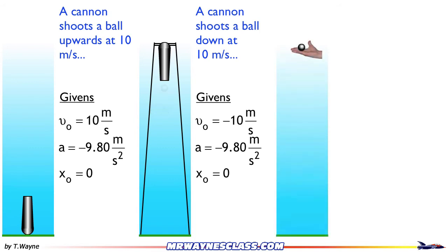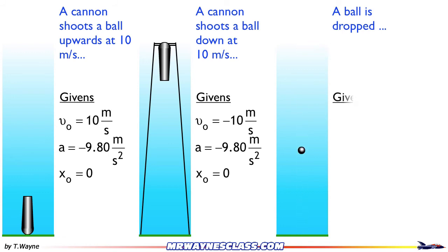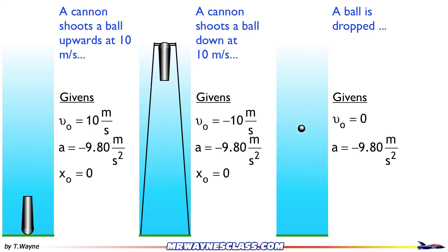Now let's consider a third situation: a ball is dropped. In the word problem it might say a ball is dropped, an object is dropped — 'dropped' being the key word. Here's what the motion looks like as it goes down. In terms of givens, the initial velocity is zero because the hand at the top is not pushing it up or down — it's just letting it go. The acceleration is still negative 9.8 meters per second squared, and x-naught is zero, meaning we start measuring from the very top.